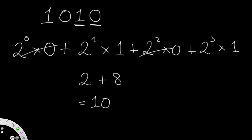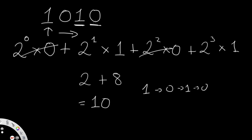So 1010 in binary represents the number 10 — that's how we convert it to an integer. Now let's think about this in a linked list context. We'd have one pointing to zero pointing to one pointing to zero, and we're going from left to right, so the first value is the most significant bit.